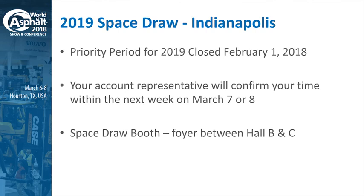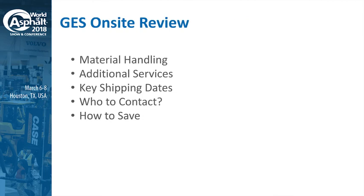Just a quick note about 2019: space sales have been open for the 2019 show in Indianapolis. The priority period ended February 1st. If you got your space application in by February 1st, you'll be able to select your space on-site at the show. The majority of space selection will be happening on-site in Houston on Wednesday and Thursday. The space draw will be in a booth in the foyer main level between Halls B and C, and more information will be communicated very shortly to the exhibitors that fall into that group.